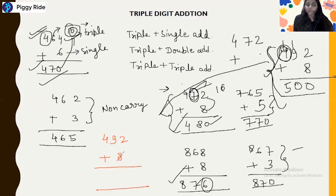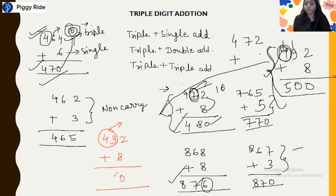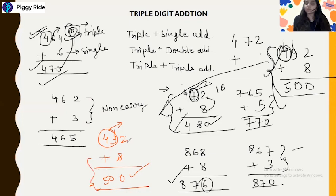Here the carry will go to the third number also. So you can consider it as 49 — you take only the first two digits from the left as a group. So 8 plus 2 is 10, the end number is 0, and then 49 plus 1 is 50. So the answer is 500. You do not have to go through carry at each step like the conventional method. Just take the group of two numbers from the left and solve.